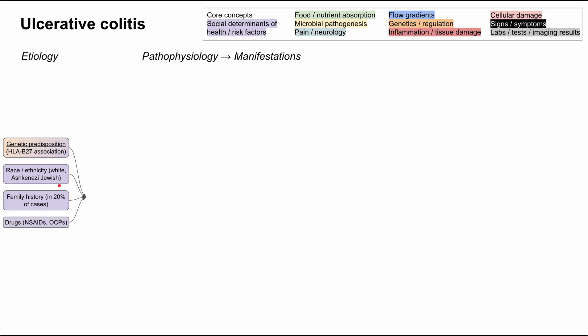There are some drugs like NSAIDs and oral contraceptives that can predispose you to having ulcerative colitis. It's also been found that people who eat a lot of saturated fats or animal fats tend to get ulcerative colitis. This can either originate the disease or cause flare-ups, making it another predisposing etiology.